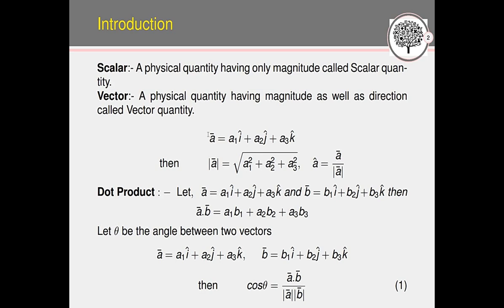Vectors are denoted by a bar notation. Vector a-bar is denoted as a1 i-cap plus a2 j-cap plus a3 k-cap. The cap symbol represents a unit vector. i-cap, j-cap, and k-cap are unit vectors along the x, y, and z directions respectively, and a1, a2, a3 represent the distances along those directions.